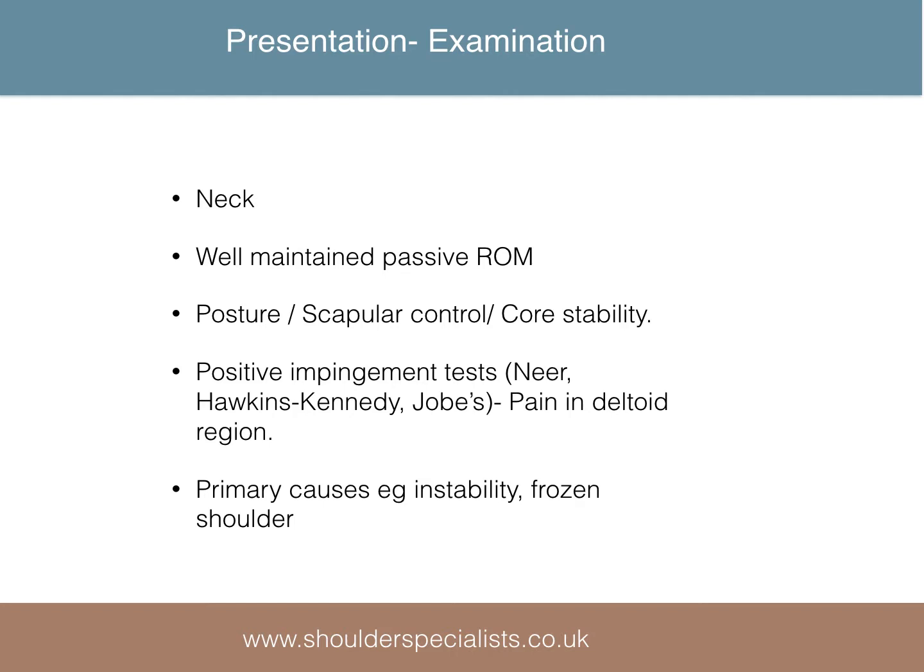Examination of the shoulders specifically for rotator cuff problems still starts with an assessment of the neck, looking to eliminate cervical nerve root compression as a cause of the shoulder pain. I find Sperling's test useful for this. With pure cuff disease, passive range of motion should be well maintained, particularly external rotation, though forward flexion and abduction are often limited due to pain generated as opposed to actual stiffness.